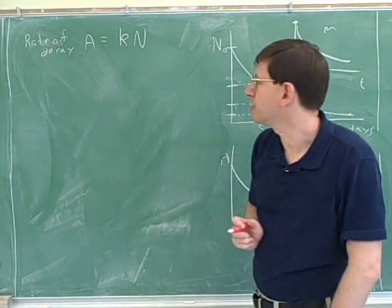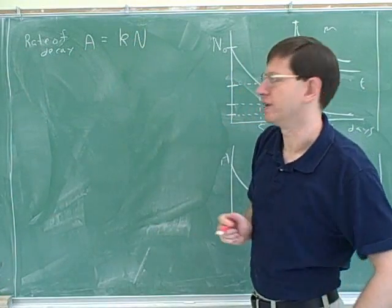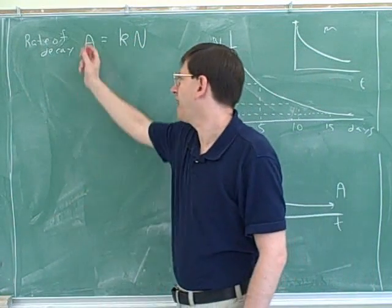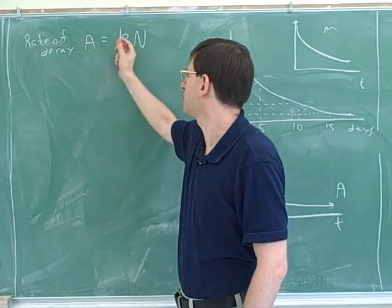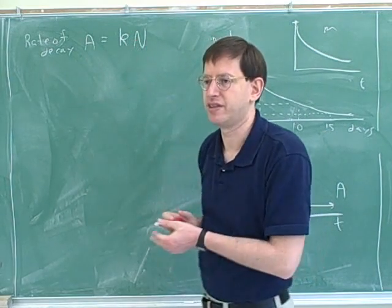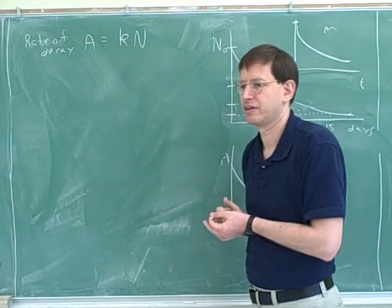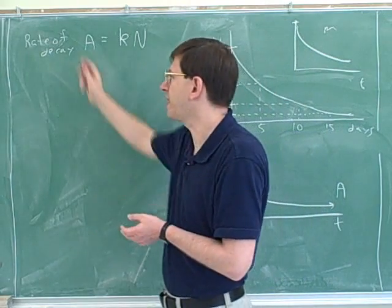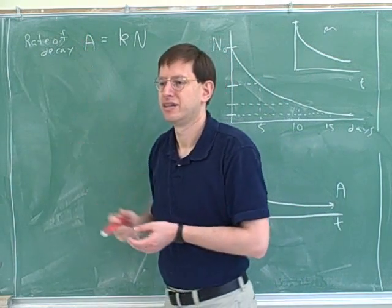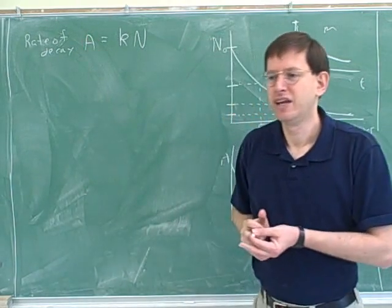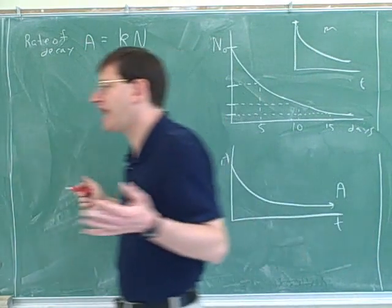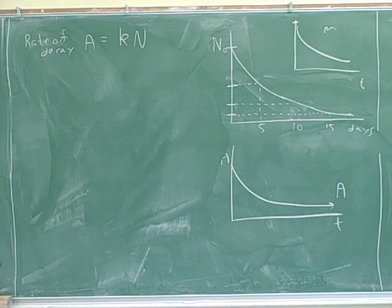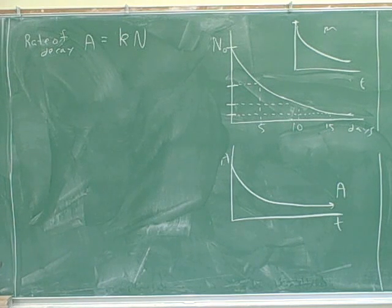Remember, this is the formula we decided on earlier. The decays per second is proportional to the number of nuclei that are left. If you think about it, this is a rate law. Radioactive decay is a type of reaction, and this is telling us the rate law for that reaction — it's telling us what rate it's happening at.